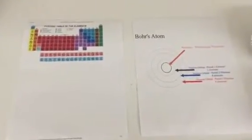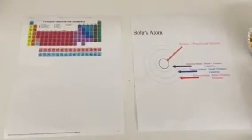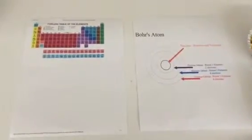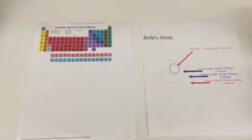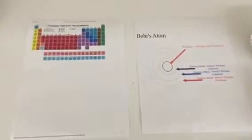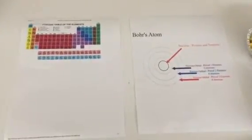Hello, fifth grade. Ms. Solari here with a quick demonstration on how to make an atomic model. What you'll need is your periodic table of elements reference sheet and your Bohr-Atom diagram.